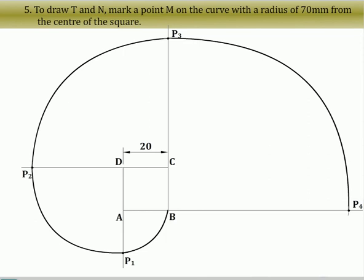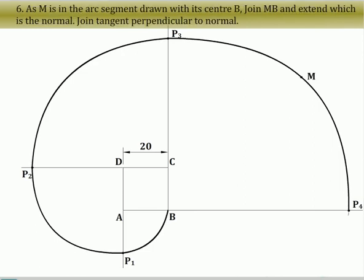To draw tangent normal, mark a point M on the curve with a radius of 70 millimeter from the center of the square. As M is in the arc segment drawn with center B, join M with B to get the normal. Now draw tangent perpendicular to the normal.